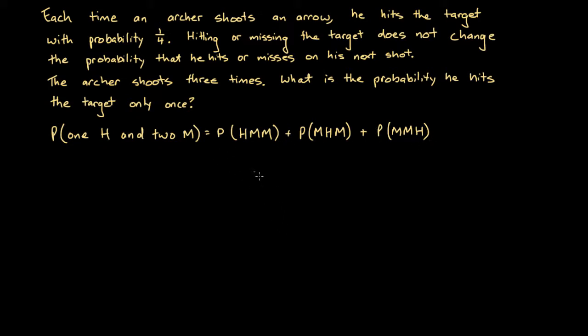What we need to do is find each one of these individual probabilities, and to do that we're going to draw a probability tree diagram. It's going to be quite a big diagram, so I'm going to have to start off quite small here.